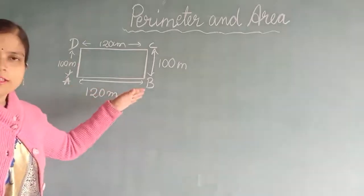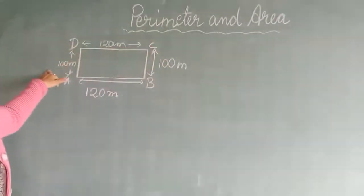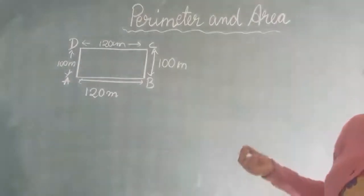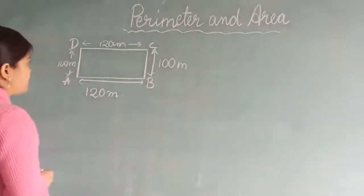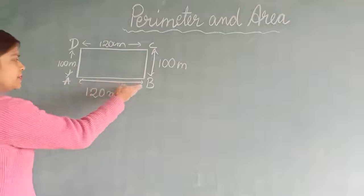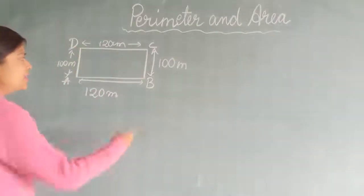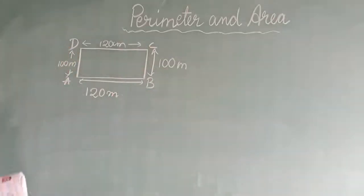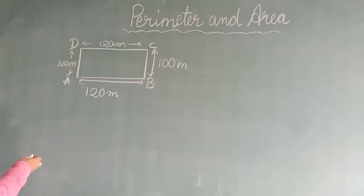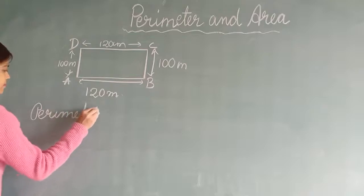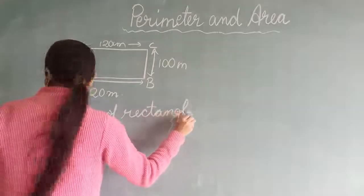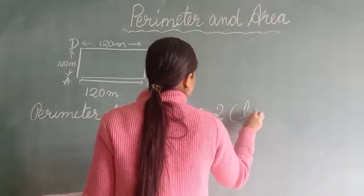We simply add the length of all the sides: 120 plus 100 plus 120 plus 100. That is one way to calculate the perimeter. The alternative method is to use the formula for a rectangle. The formula is: perimeter equals 2 times (length plus breadth). The length is 120 metres and the breadth is 100 metres.